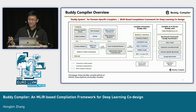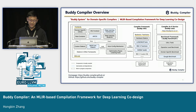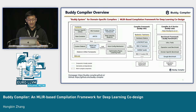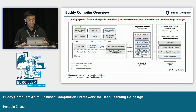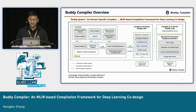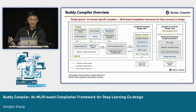This is the overview of our whole framework. We currently have three main modules: the compiler framework, the online service, and the benchmark framework. Today I will focus more on the compiler framework, which we have split into front-end, mid-end, and back-end.